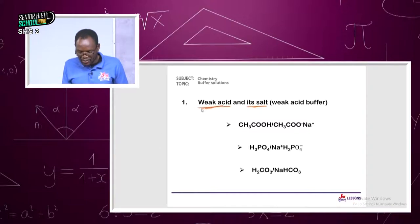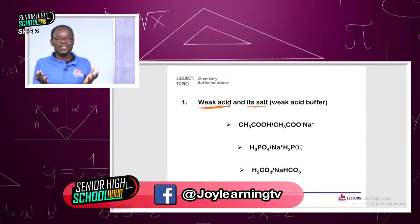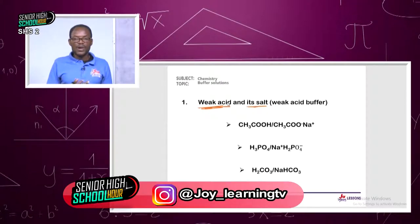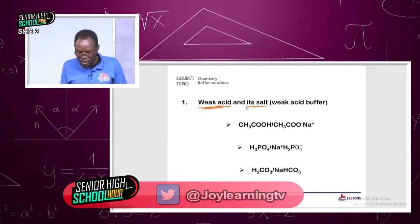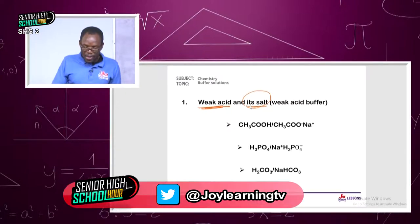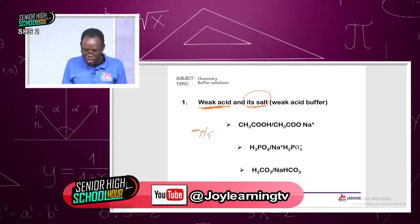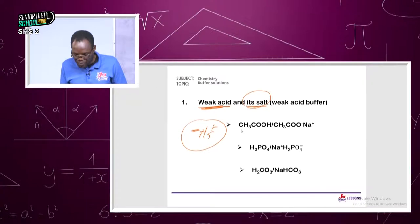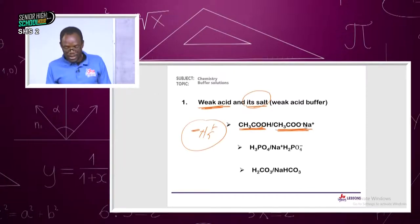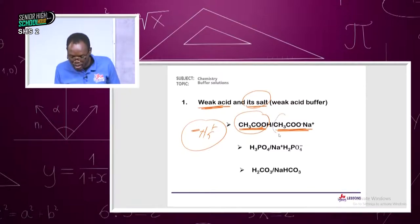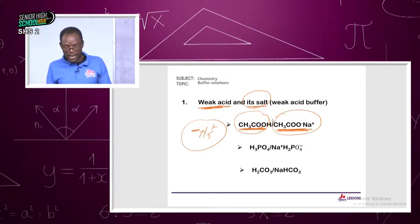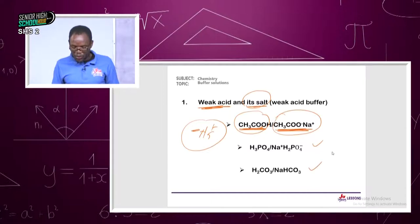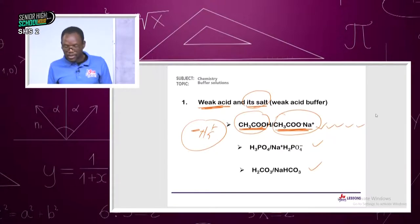The conjugate base of an acid is an anion and is intangible, so it must form a salt. For a weak acid buffer, we have the weak acid and its conjugate base — which forms a salt. For example, ethanoic acid (CH₃COOH) with sodium ethanoate (CH₃COONa) is the most common example. Another example would be HNO₂ with NaNO₂.